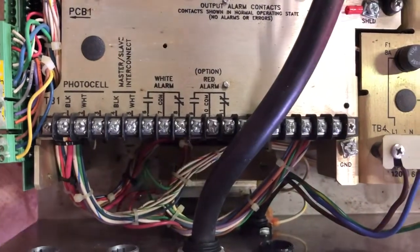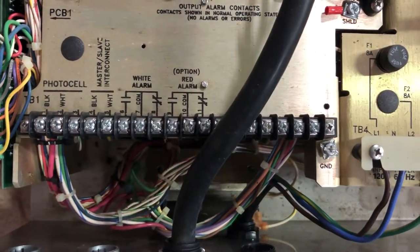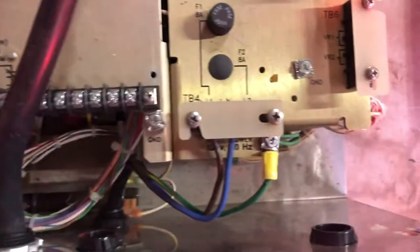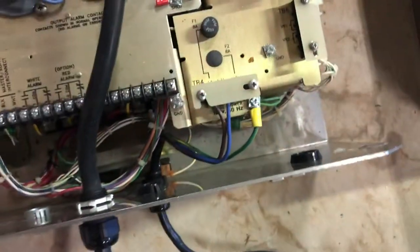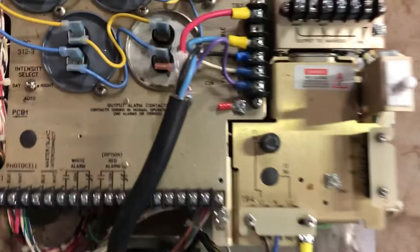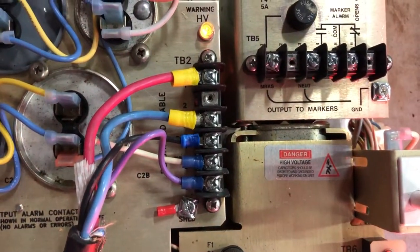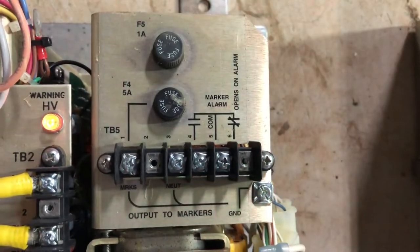And here is terminal block 1 or TB1. This is where you connect your photocell and your master-slave interconnect or any alarms. And this is TB4. This is your main power input. And this controller is just a regular marker light.